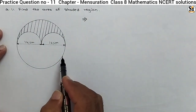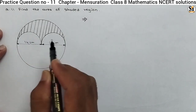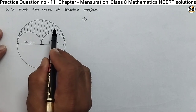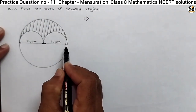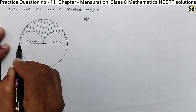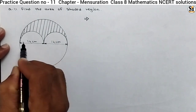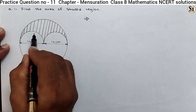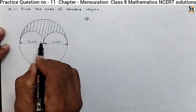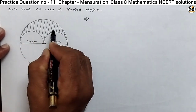A circle is given, and inside the circle two half circles are drawn. We have to find the area of this shaded region. For that, we must calculate the area of the whole circle, then take half of it. Because we take only the half portion, and subtract the area of the small circles, then we will get the area of the shaded portion.